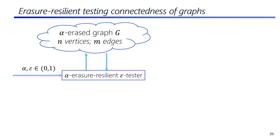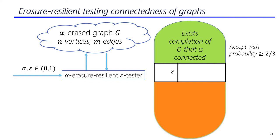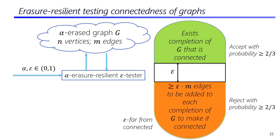The first problem we study is erasure-resilient testing of connectedness. An erasure-resilient tester is given parameters alpha and epsilon, and oracle access to an alpha-erased graph G. The tester must accept with probability at least two-thirds if there exists a completion of G which is connected, and must reject with probability at least two-thirds if at least epsilon times M edges need to be added to every completion of G to make it connected. We say such a graph is epsilon-far from connected, and we refer to epsilon as the proximity parameter.